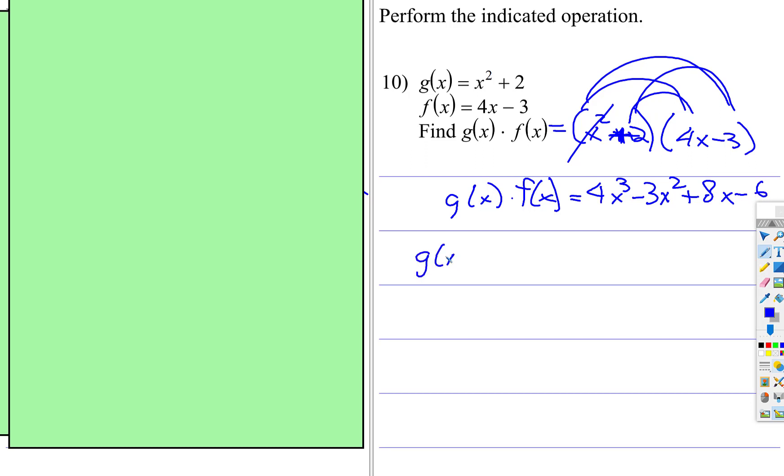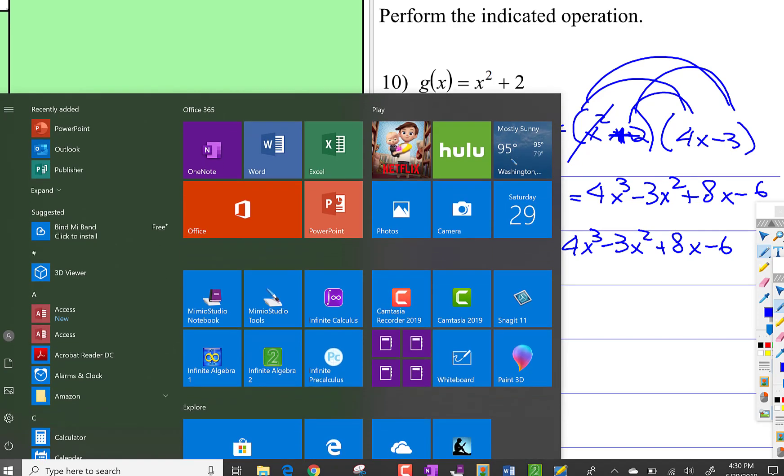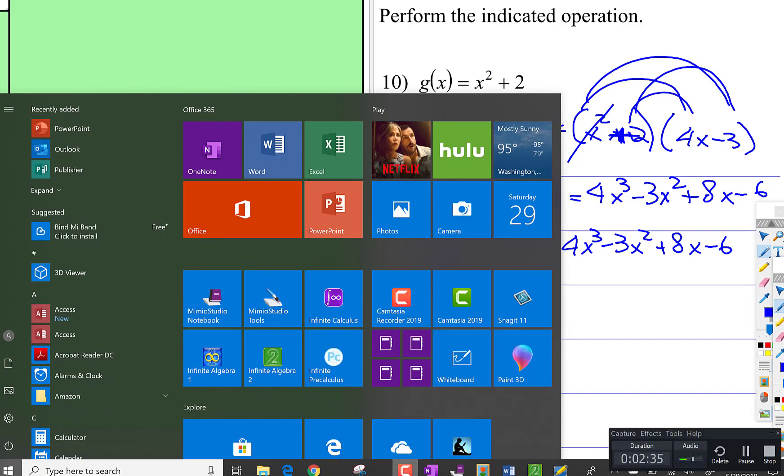And that, so this function, there are no like terms. So the result is 4x cubed subtract 3x squared plus 8x subtract 6. And we're done with that. So that is composing a new function from two given functions using multiplication.